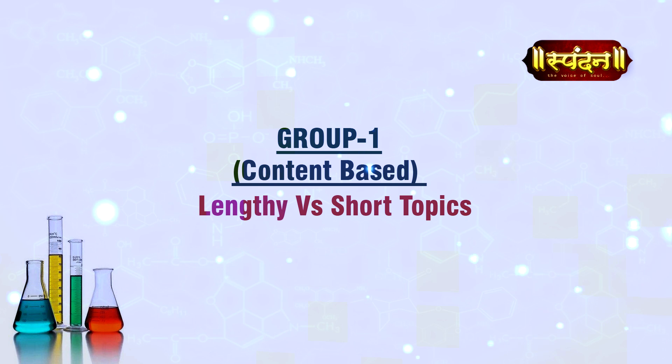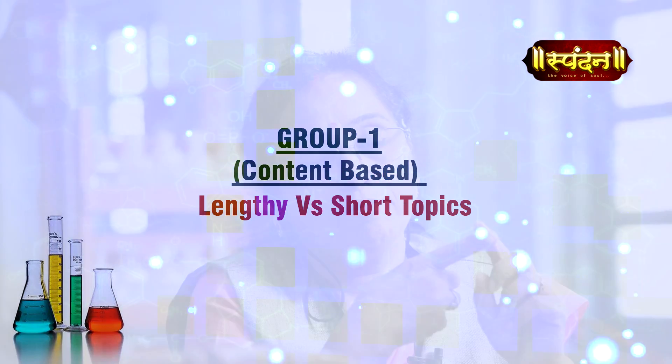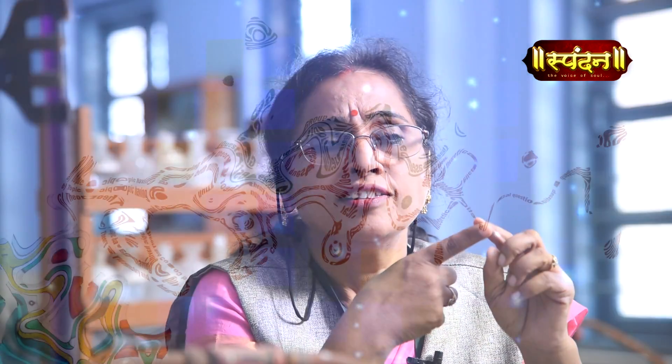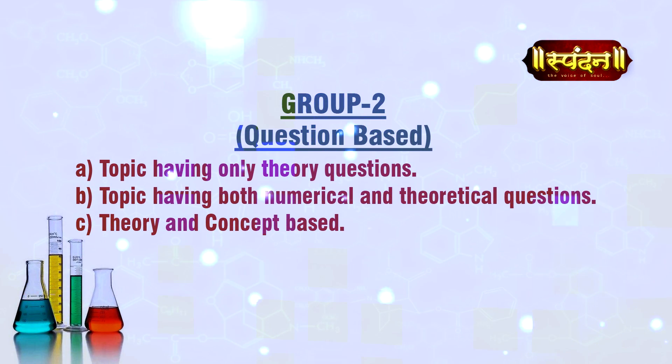This is how you can make the most of that time. The main syllabus can be divided into three different groups or categories. The first is content-based topics — those that are very lengthy and elaborate, such as electrochemistry, p-block elements, solid state, and solutions, and shorter topics like everyday life, polymers, extraction, etc.